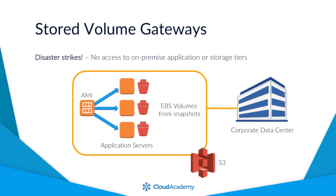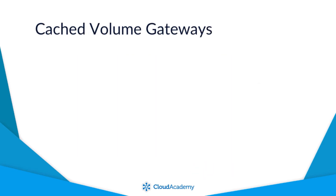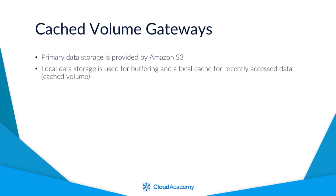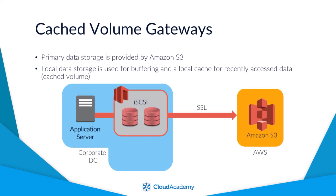Cached volume gateways differ from stored volume gateways in that the primary data storage is actually Amazon S3 rather than your own local storage solution. However, cached volume gateways do utilize your local data storage as a buffer and a cache for recently accessed data to help maintain low latency. During the creation of these volumes, they are presented as iSCSI volumes which can be mounted by your application servers. The volumes themselves are backed by the Amazon S3 infrastructure as opposed to your local disks as seen in the stored volume gateway deployment.